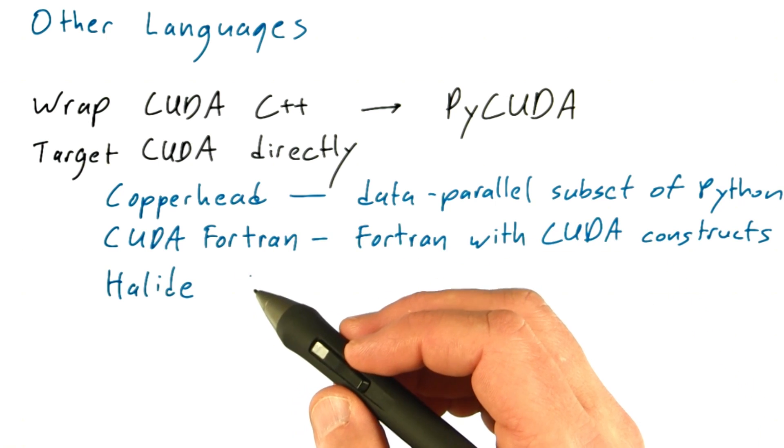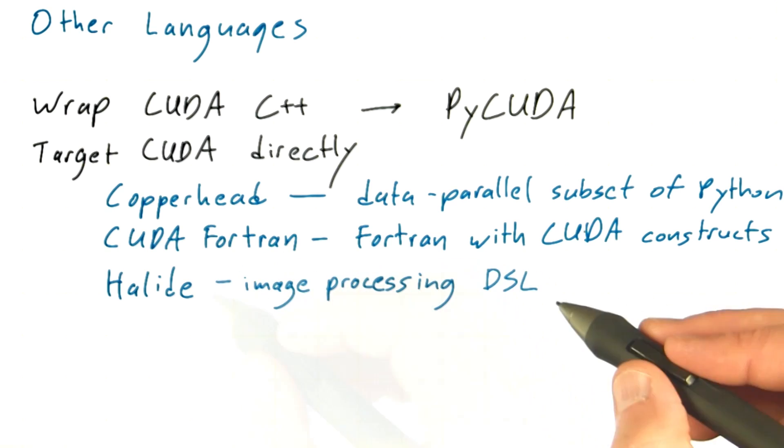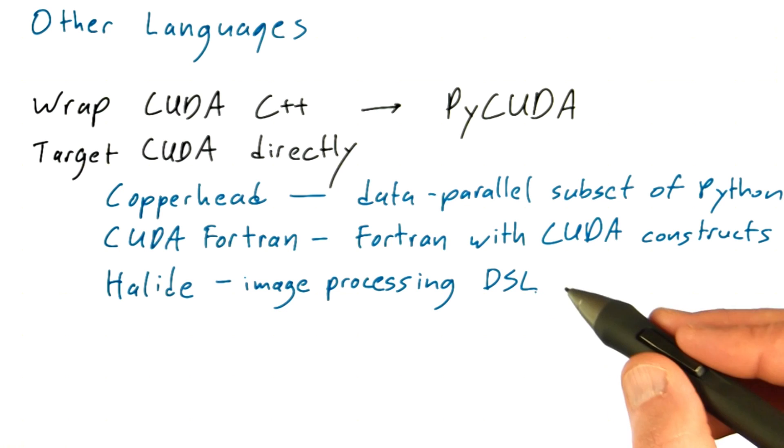More on the research front, Halide is a brand new language specifically designed for image processing. This makes it a DSL, or domain-specific language, and it's a really cool example of this.